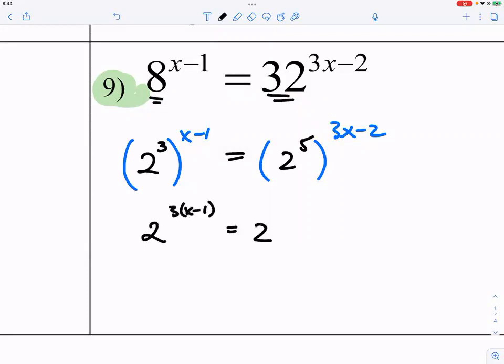So 3x minus 3 equals 15x minus 10. So you subtract 3x on both sides, you get 12x. And then you plus 10 on both sides, you get 7.